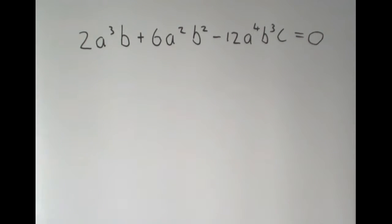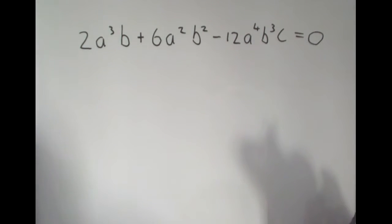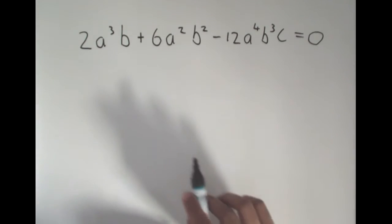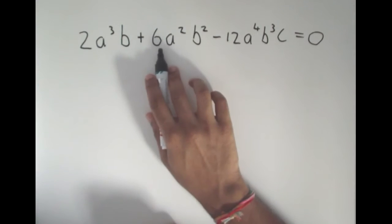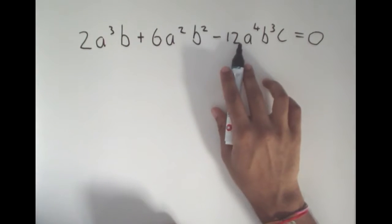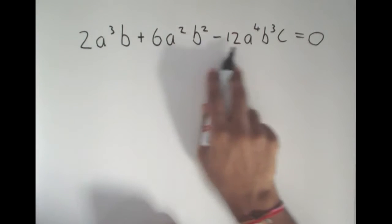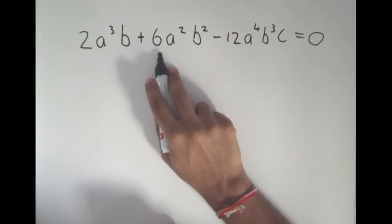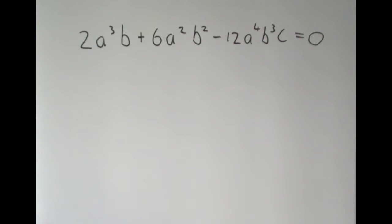How we take out a common factor is that we look in each term and see what is the same. First we look at the whole numbers. We have a 2, a 6, and a 12. I know that 2 is in each of these, because 2 goes into 6 and 2 goes into 12, and that's the biggest number that goes into all of them.